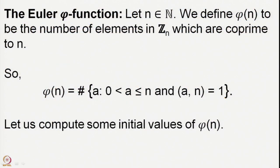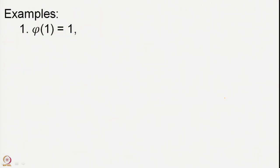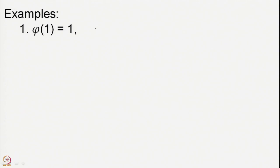For the moment, let us try to compute some values of phi(n). Of course, phi(1) is 1 because there is the element 1 which is less than or equal to n, and that is the singleton — the only element from 0 to n having GCD 1 with n when n equals 1.